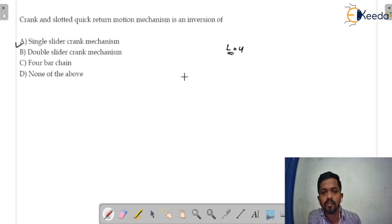In the crank and slotted quick return motion mechanism, connecting rod is fixed. You must remember this, connecting rod is fixed and this is an inversion of single slider crank mechanism. So for this question, option A would be the correct answer.